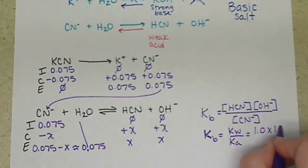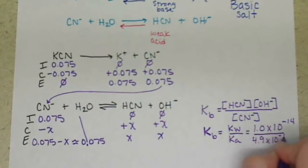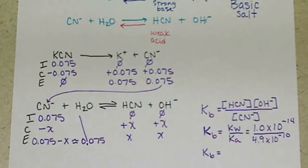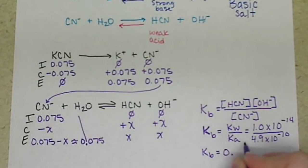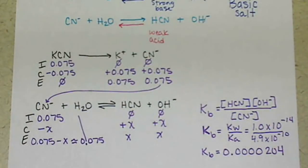Using our expression from the previous lesson, we know Kb is going to be equal to Kw divided by Ka. Our value for Kb works out to 0.0000204.